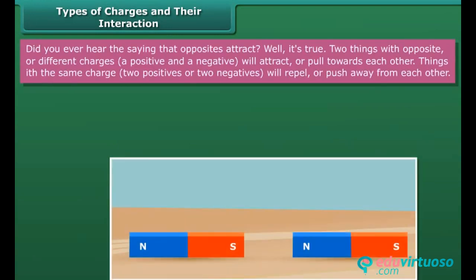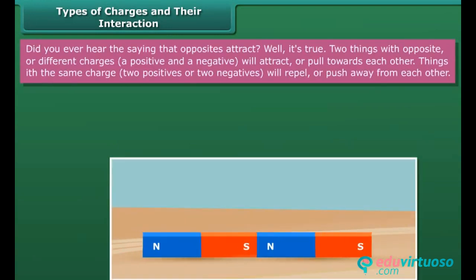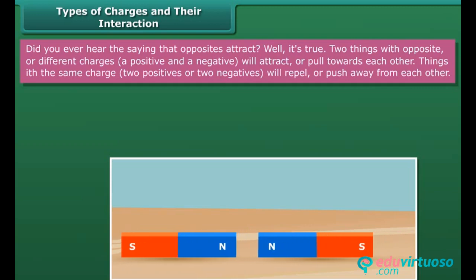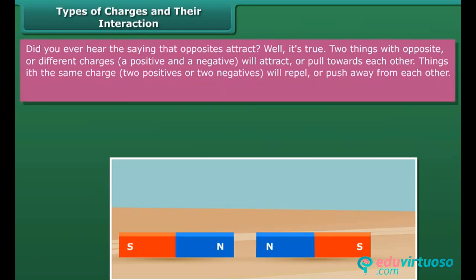Two things with opposite or different charges — a positive and a negative — will attract or pull towards each other. Things with the same charge — two positives or two negatives — will repel or push away from each other.